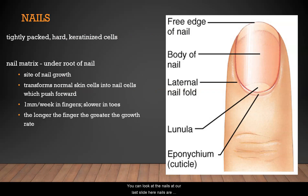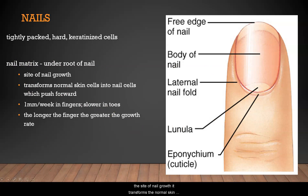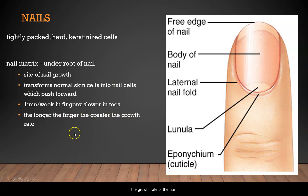Nails are tightly packed, hard, keratinized cells. The nail matrix, under the root of the nail, is the site of nail growth — it transforms normal skin cells into nail cells that then push forward. Nail growth happens at about one millimeter per week in the fingers and is slower in the toes, with longer fingers having a greater growth rate. And with that, we'll call it there, and I'll see you in the next lecture.